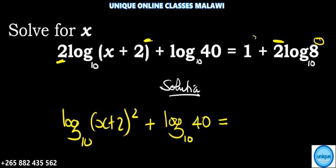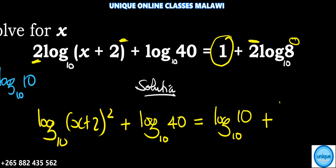So we have log of (x+2)² base 10, plus log of 40 base 10. Then it's equal to 1. Now if you are going to apply the law of logarithms, whenever you have a log of a number which equals the base, it equals one. So log₃ 3 equals one. In this one we are using 10 as our base, so instead of writing 1, we write log 10 base 10.